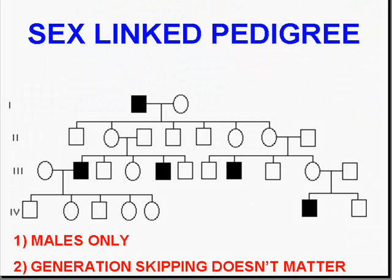The pedigree for sex-linked diseases is much easier to differentiate from autosomal dominant and recessive pedigrees, because only males — these blocky things — are involved. It's really easy to differentiate from the other two. Generation skipping may happen, but it doesn't matter; you only have males that are involved.